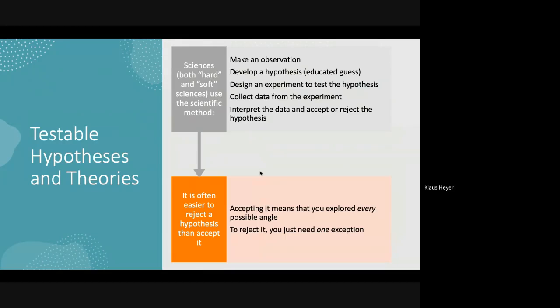The scientific method involves several steps. It starts with an observation, then you form a hypothesis — an educated guess about what is going on. You design an experiment to test that hypothesis, collect data, and then interpret the data, either accepting or rejecting the hypothesis.